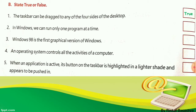In your textbook the box may be too small, but you have to write the whole spelling T-R-U-E, true. Number 2: In Windows, we can run only one program at a time. In Windows operating system, can we run only one program at a time? No — we can work on more than one program at a time; it is multitasking. So number 2 is false. Write in the second box: F-A-L-S-E, false.